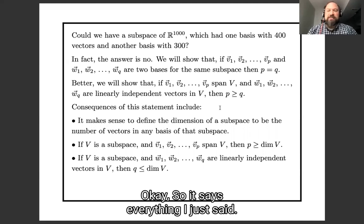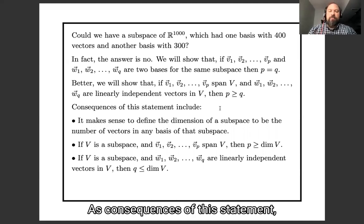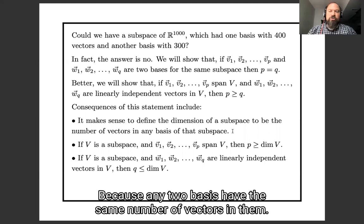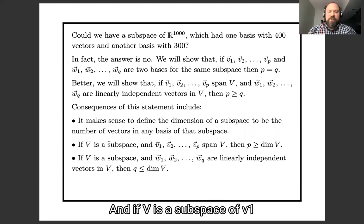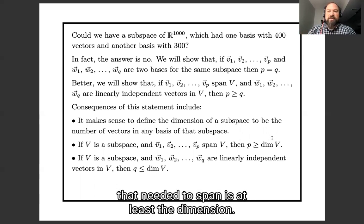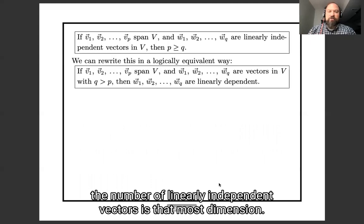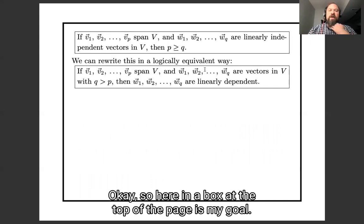Right, okay, so this says something I just said. As a consequence of this statement, it does make sense to define dimension to be the number of vectors, because any two bases have the same number of vectors in them. And if V is a subspace of v1 to vp span, then p is at least dimension V. This is what I said, the number of vectors needed to span is at least the dimension. And if I have linearly independent vectors, the number of linearly independent vectors is at most dimension.